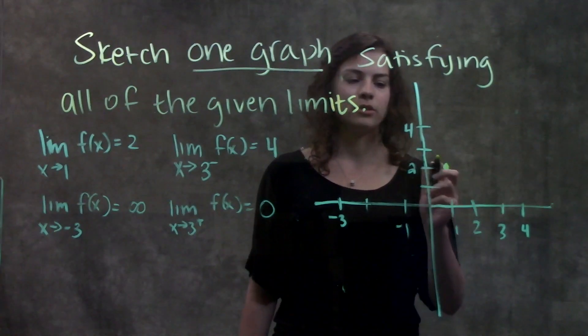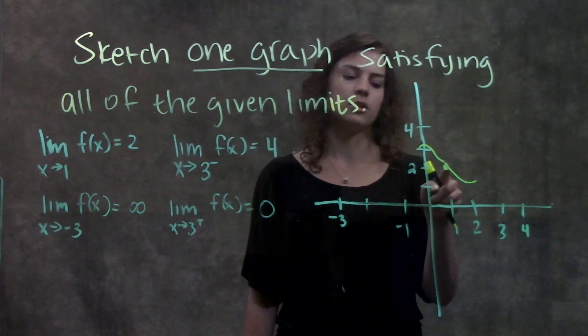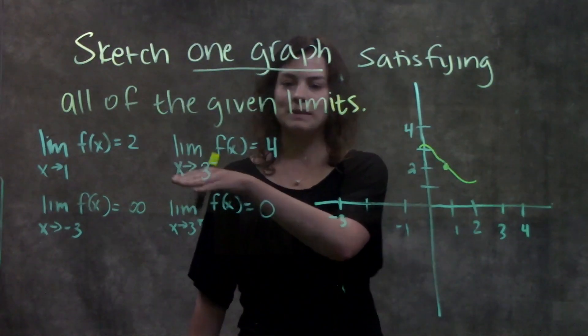It doesn't matter what the left or the right-hand side are doing. As long as x is approaching 1, the graph is going to y equals 2. We have our first limit done.